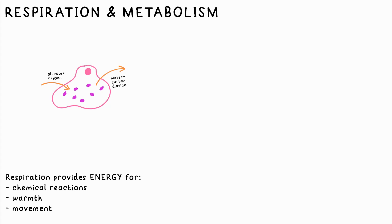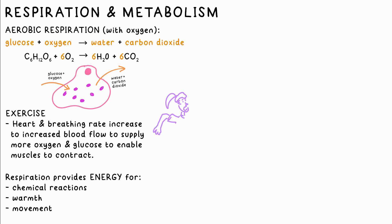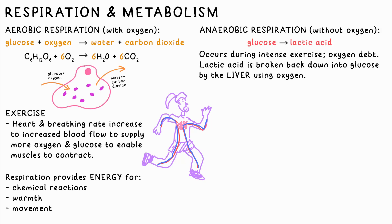Aerobic respiration means with oxygen. Here's the word and balanced chemical equations. As you can hopefully see, it's the opposite of photosynthesis. During exercise, your breathing rate and heart rate rise to increase the rate at which oxygen is delivered to your cells for respiration.